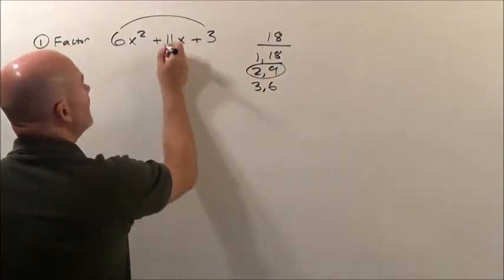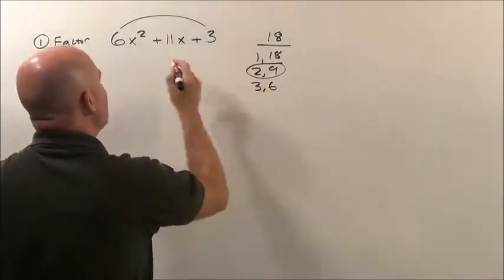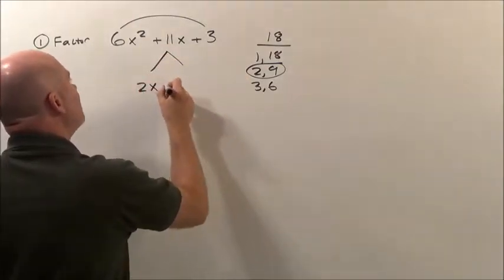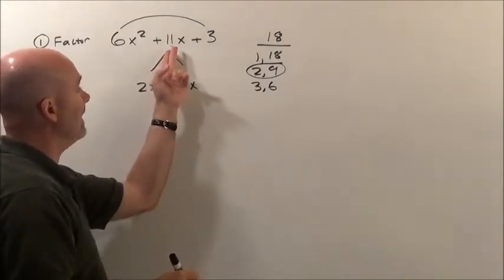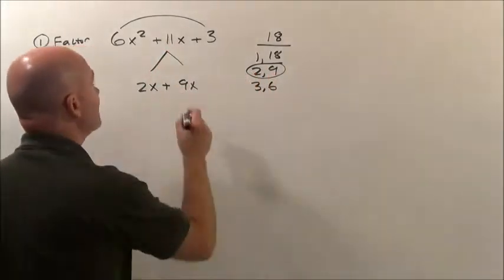What we're doing is we're taking this in front of the x, which is called the b value. This is why I call it busting b, and we're going to bust that 11 apart. We're going to change it into 2x + 9x. Because notice, 2x + 9x is 11x. That's what we did to help us know that it was going to be 2x and 9x.